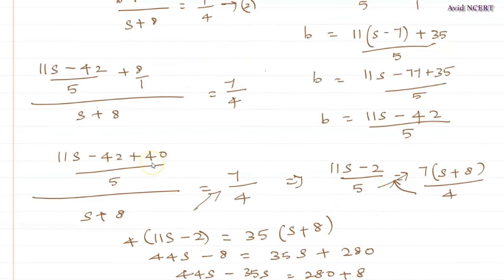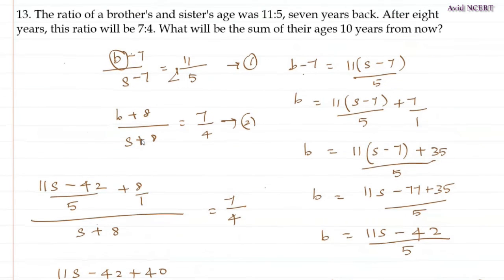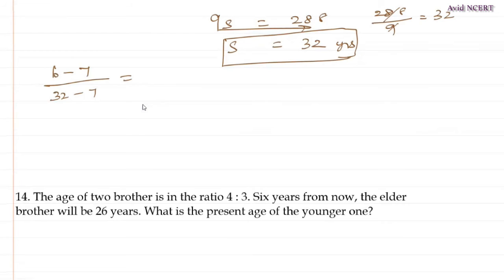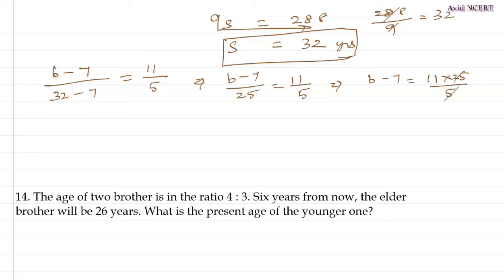Now substitute the value of sister's age in the first equation. So (b minus 7) divided by (s minus 7), where s is 32, so (b minus 7) divided by (32 minus 7) equals 11 by 5. That is (b minus 7) divided by 25 equals 11 by 5. Cross multiplication: b minus 7 equals 11 times 25 divided by 5, which is 55. So b equals 55 plus 7, therefore b equals 62.